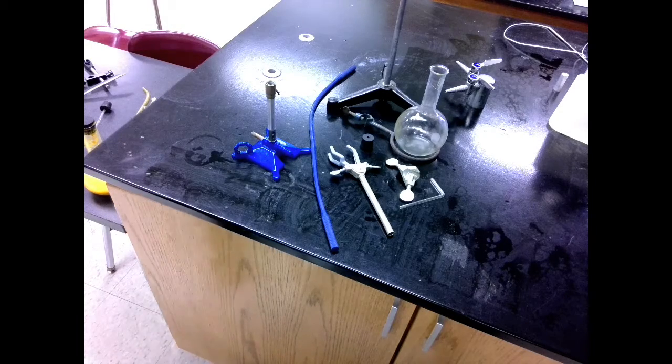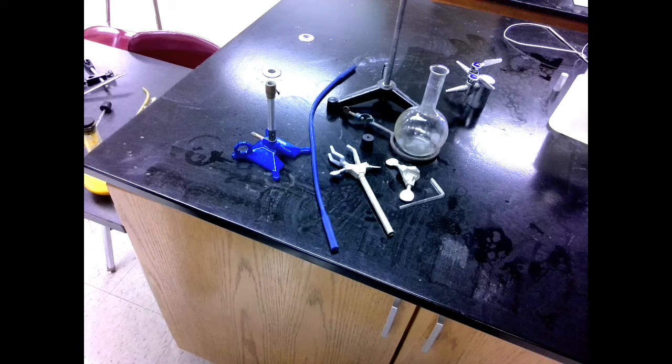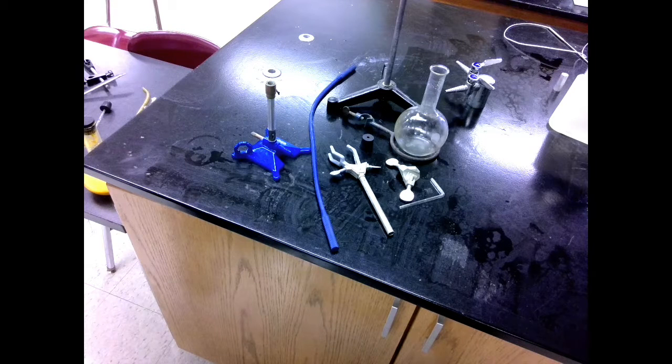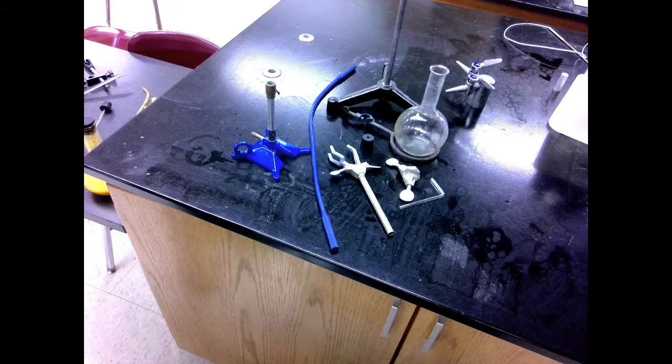The first part of our setup is going to be the steam production portion. We're using steam production because we don't want to damage the organic material. Direct heat would burn and chemically change the orange zest, and we would not get pure organic oil, which is what we're looking for.